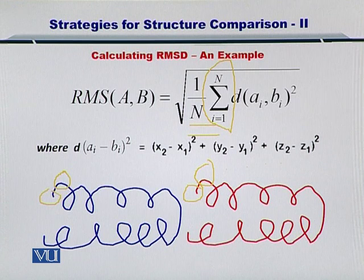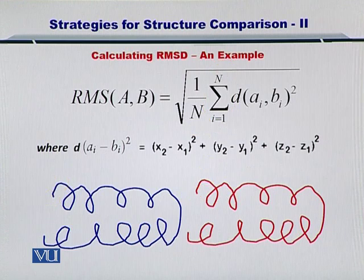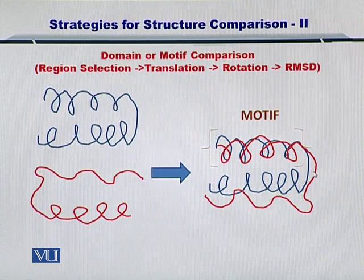In this way, you can compute the RMSD. And of course, if the RMSD is small, then the proteins are similar.